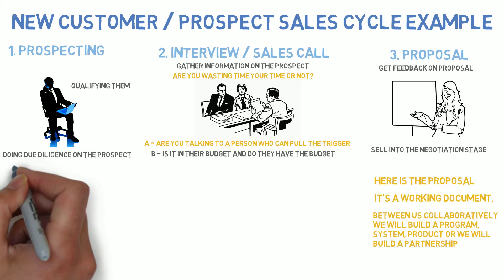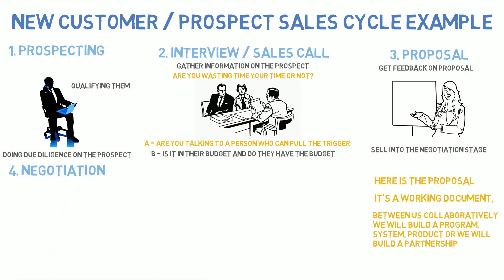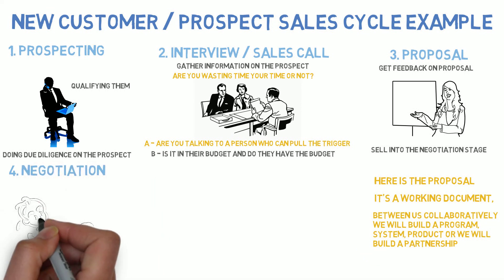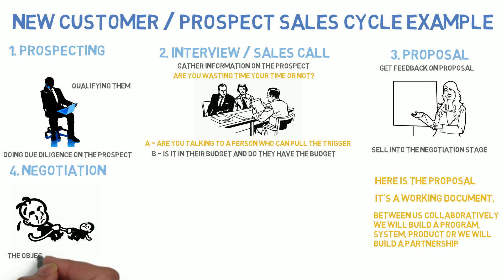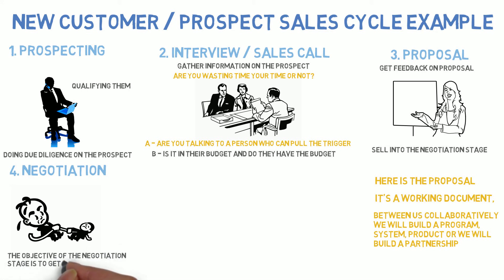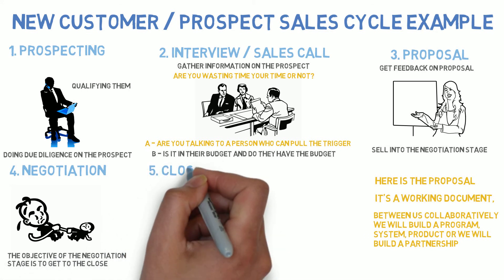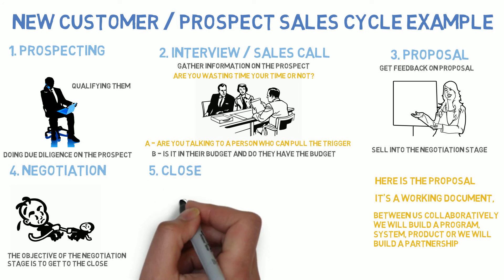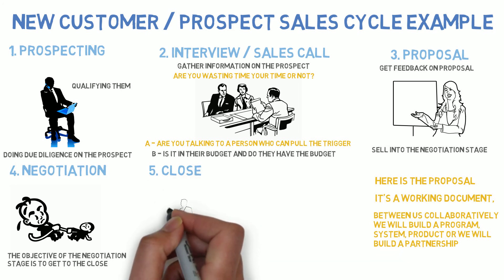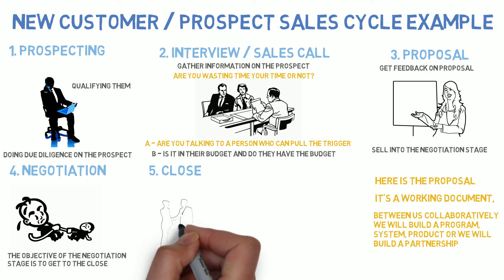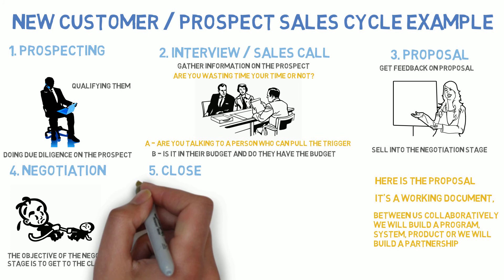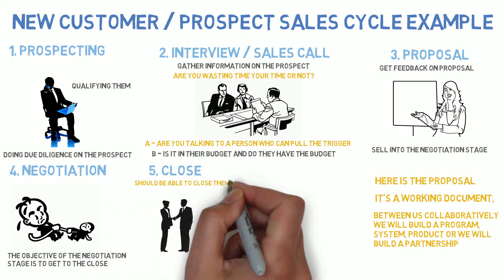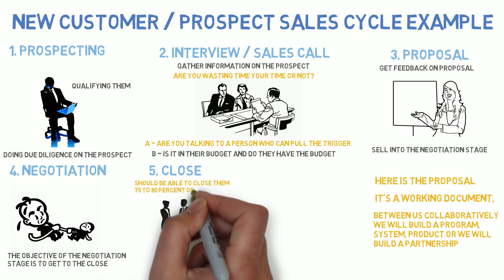The objective of the proposal stage is to engage the customer in negotiation. And just by asking for their feedback, you start in the negotiation stage. In the negotiation stage, obviously the objective is to get to the close. So you have: prospect, interview, proposal, negotiation, close. There may be steps between those in different industries — you may have to propose several times. But once you engage them in negotiation, our research shows you should be able to close them 75% to 80% of the time.